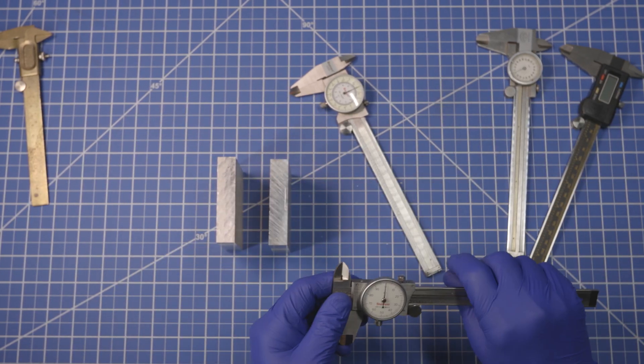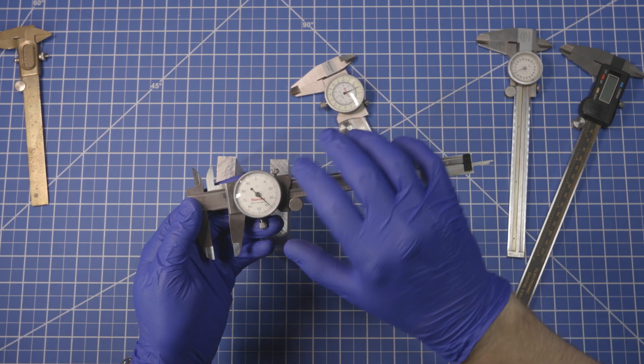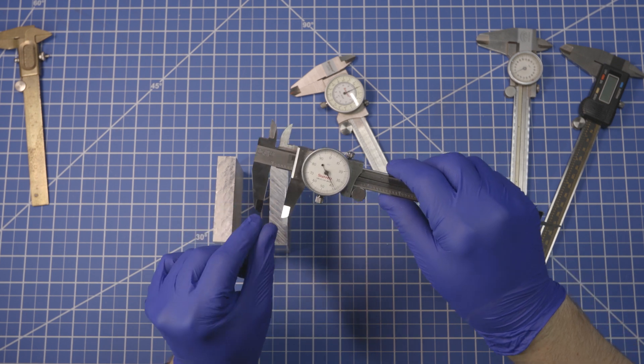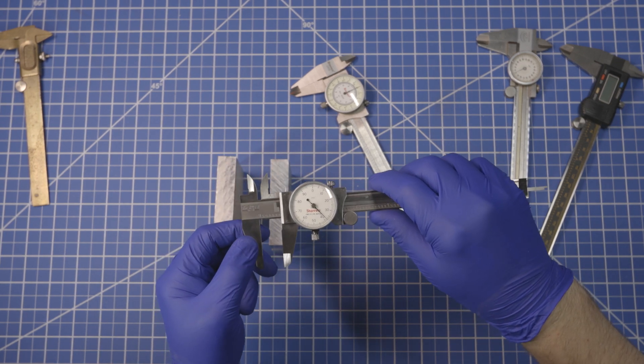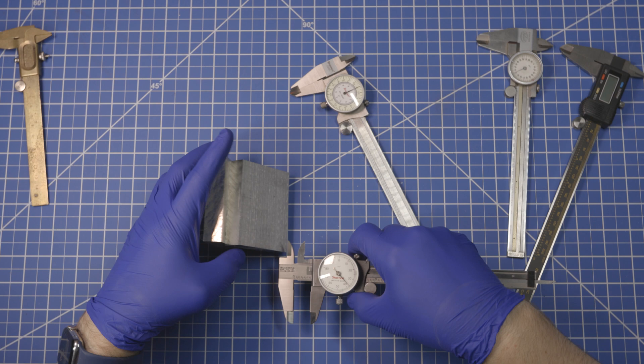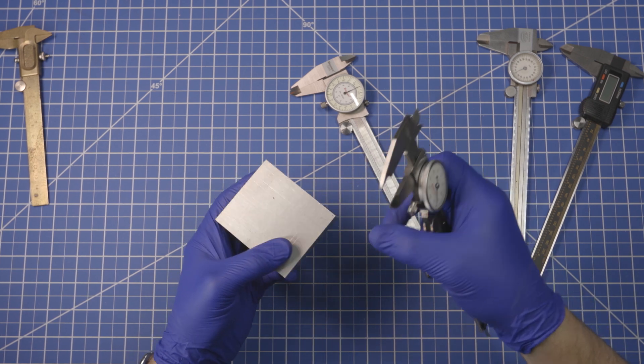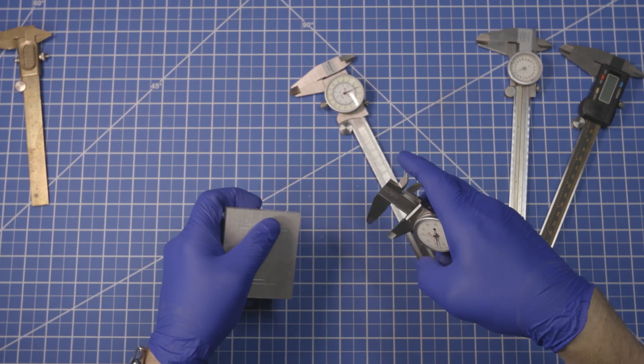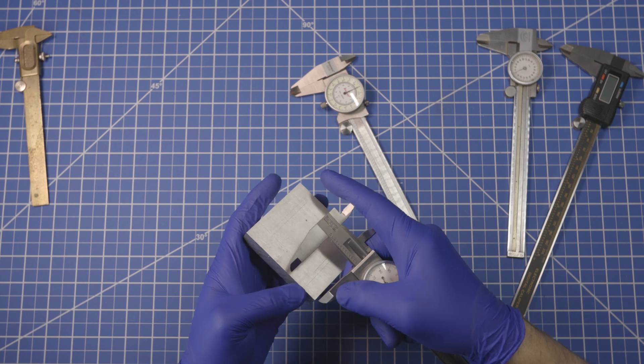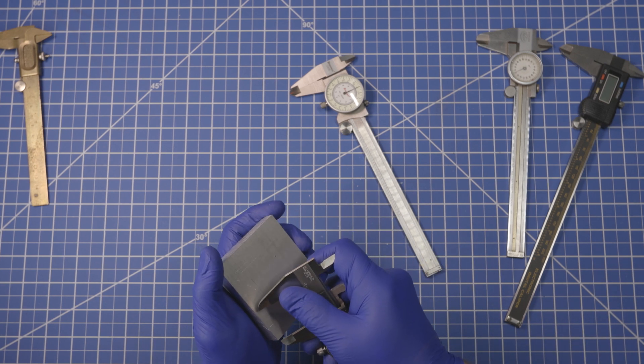Besides the basics of measuring, these calipers do have kind of secondary functions that they do. Because these four, not this brass thing over here, these are all made of hardened stainless steel, which means that these tips are very hard and quite sharp. So you can use these tips as scribes. What that means, let's get this guy out of the way. If you had your block and you needed to mark a line on it, it doesn't really matter what the mark is. I'll make this a little bit wider though.